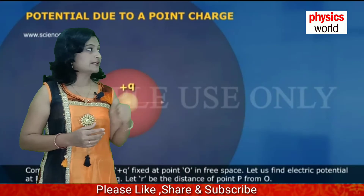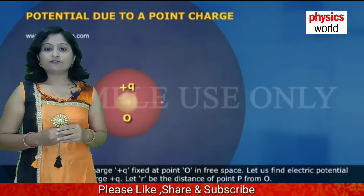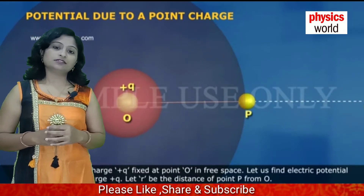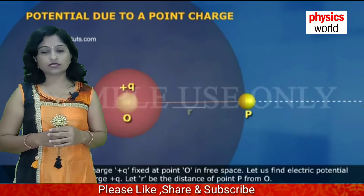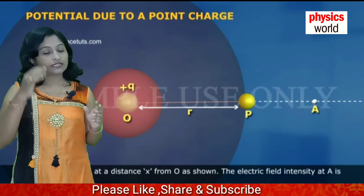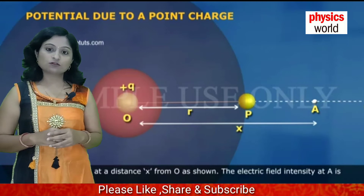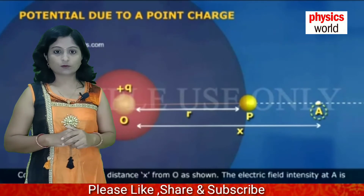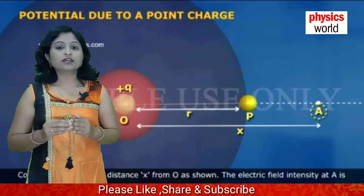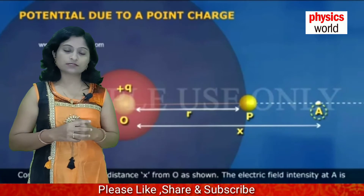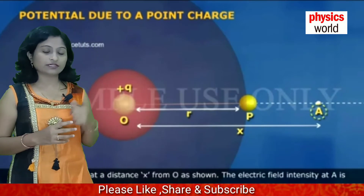Now we will start. In this diagram we have a charge plus Q placed at O. A test charge plus Q₀ is being brought from infinity towards plus Q. The distance of that test charge plus Q₀ is X from point O. By doing small work, we bring that charge from M to N, which requires a small displacement dx as represented in the diagram.